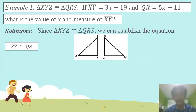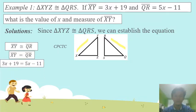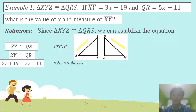Since both triangles are congruent, we can establish the equation. Segment XY is congruent to QR. Therefore, segment XY is equal to segment QR. So, 3X plus 19 is the value of our segment XY, and 5X minus 11 is the value of our segment QR, as stated in the problem.